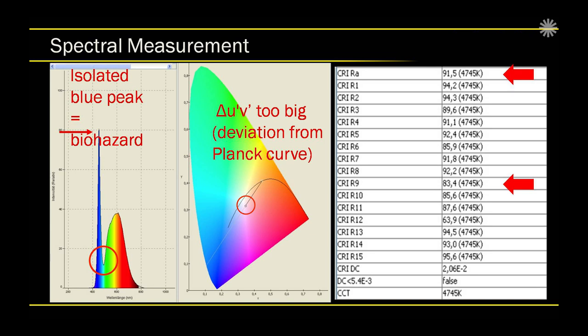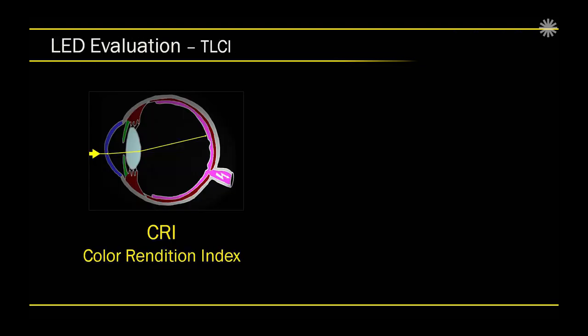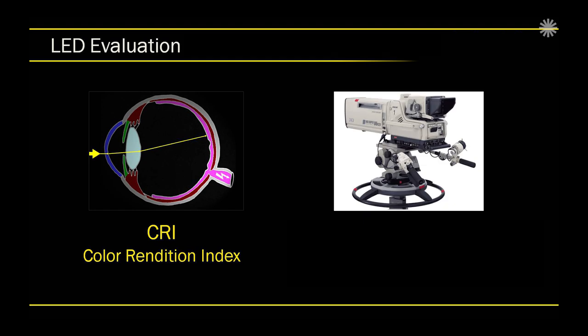We therefore prefer to work with an expanded CRI system that evaluates and shows 14 different colors. Here, very often we see that R9 — the full red — with many light sources shows particular weaknesses. CRI is based on the response of the human eye. Our imaging devices today are mostly digital devices and they have a different response to the colors, especially LED light.